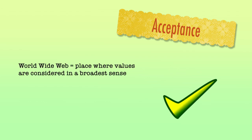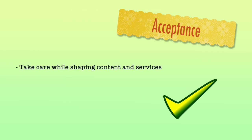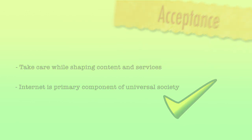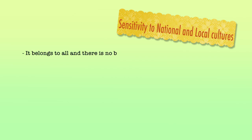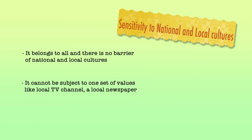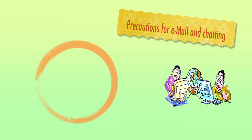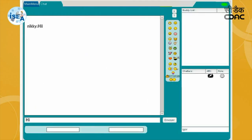Now let us discuss internet ethics. Internet ethics means acceptable behaviour for using the internet. We should be honest and respect the rights and property of others online. The World Wide Web is not a wild wasteland — it is a place where values are considered in the broadest sense. We must take care while shaping content and services and recognise that the internet is not apart from universal society but is a primary component of it. We must also be sensitive to national and local cultures, as it belongs to all without national barriers. Regarding email and chatting, the internet must be used for communication with family and friends, and we should not communicate with strangers or forward emails from strangers.